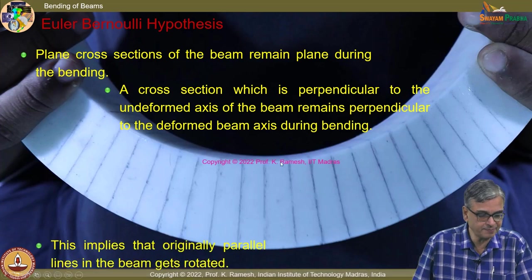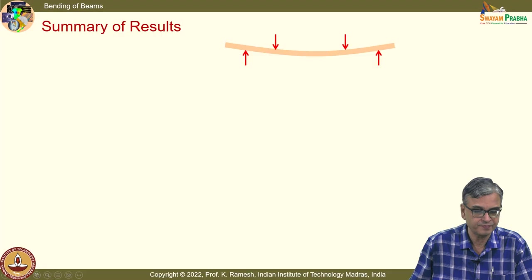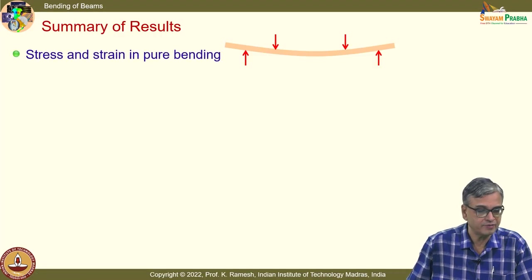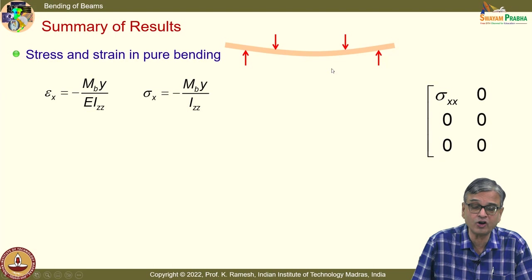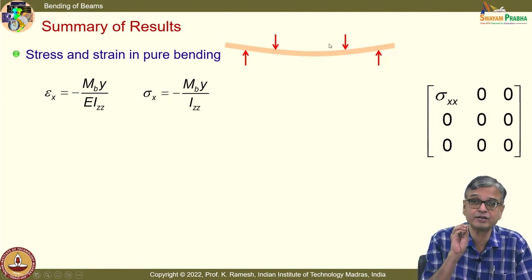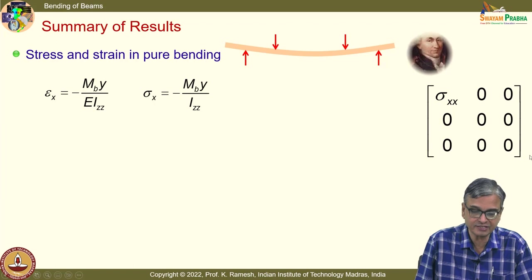This implies that originally parallel lines in the beam get rotated — very clearly seen in the experimental demonstration. In the results, we have the stress and strain in pure bending. It is very important that the theory is developed for pure bending — a beam transmitting only bending moment. We have the expression for ε_x, σ_x, and the stress tensor.